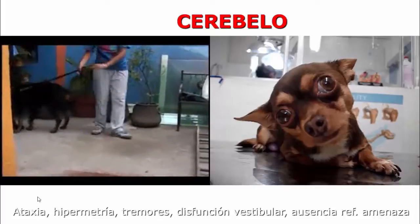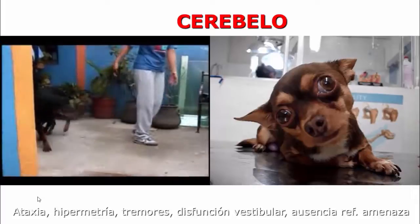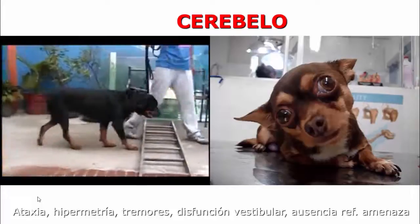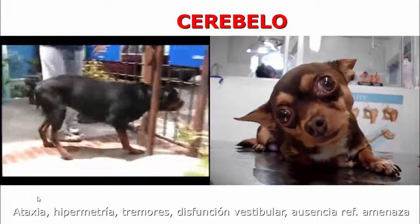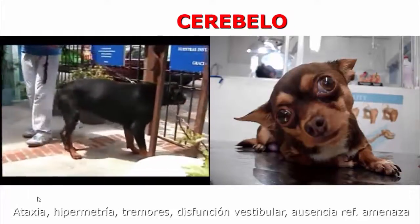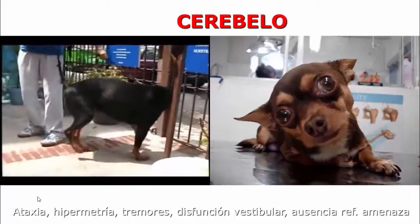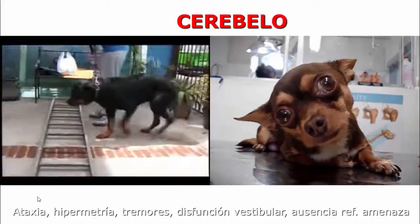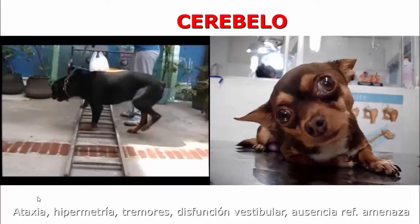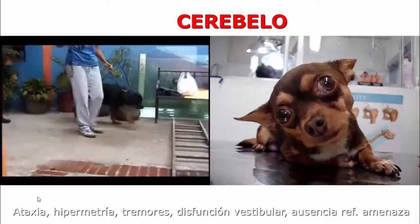El cerebelo coordina entre lo que yo quiero hacer con lo que yo hago. Tiene que aprender entre lo que el cerebro desea como movimiento y la respuesta que obtuvo, y la regula. Cuando aprendimos a andar en bicicleta, teníamos respuestas exageradas hacia uno u otro lado y después las fuimos coordinando. El cerebelo coordina el hablar, el caminar, el escribir, todos los movimientos finos.